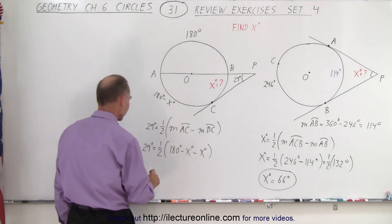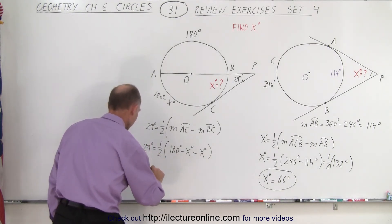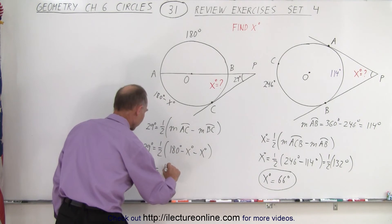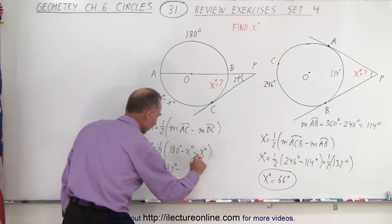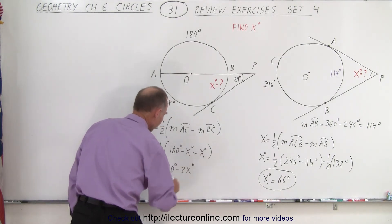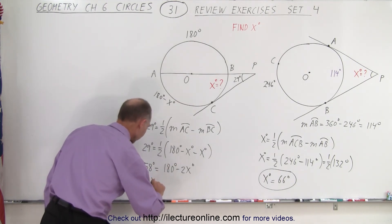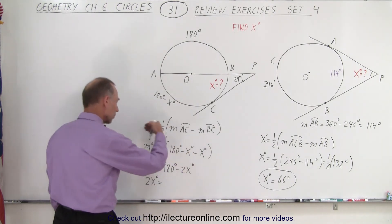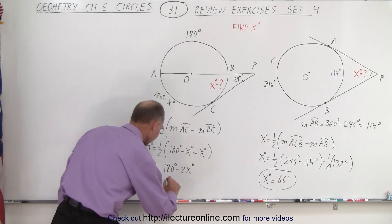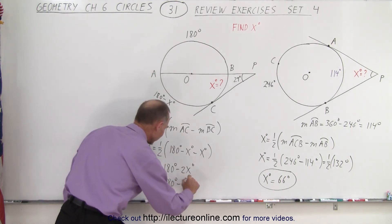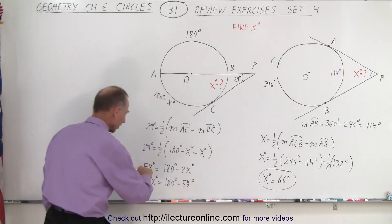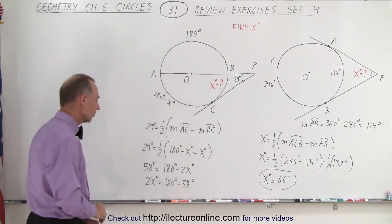So, first of all, we multiply both sides by 2, so we get 58 degrees is equal to 180 degrees minus, we can combine those, 2x degrees. So, I can move this over here and that over there. So, 2x degrees, that becomes positive when we move it to the other side, is 180 degrees minus 58 degrees. That becomes negative. And so, let's continue over here.